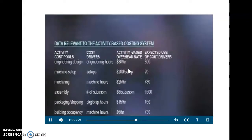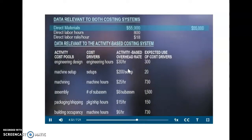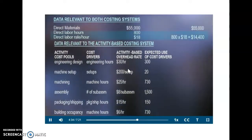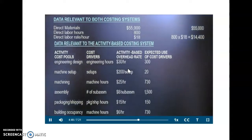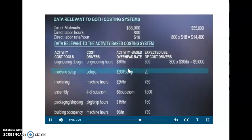Doing the math, direct materials is the same as before, $55,000, as is direct labor, 800 times $18 equals $14,400. Adding up the overhead activities costs, we have engineering design, 300 hours times $30 per hour equals $9,000. Machine setup, 20 setups at $200 per setup equals $4,000.